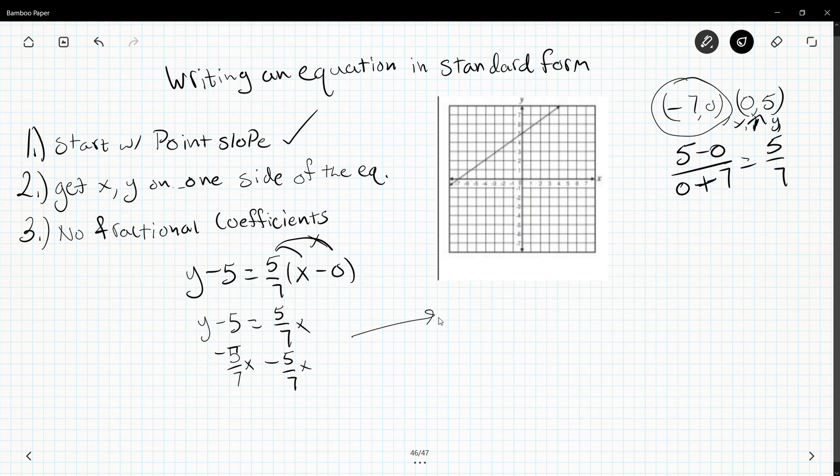I get y minus 5/7 x minus 5 equals 0. I also have to move this 5 to the other side, so I'm going to add 5 to both sides.